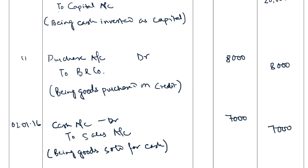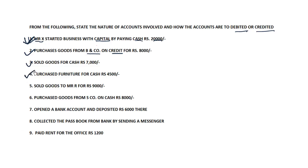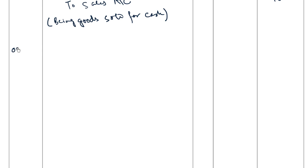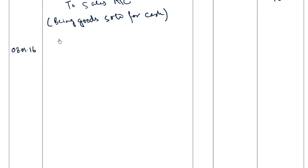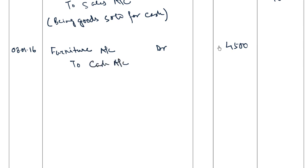The fourth transaction: purchased furniture for rupees 4,500. Furniture, being an asset, is coming in, and cash, being an asset, is going out. Debit what comes in and credit what goes out — both are real accounts. So furniture account is debited and cash account is credited for rupees 4,500. Journal entry on 3rd January 2016: Furniture Account Dr rupees 4,500, To Cash Account rupees 4,500. Narration: being furniture purchased for cash.